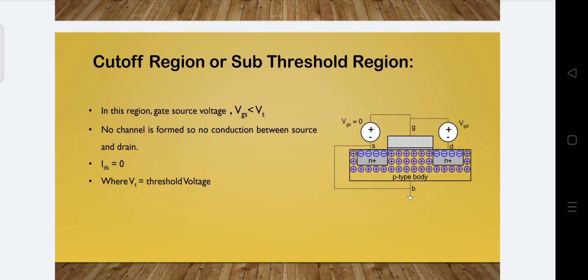First is the cutoff region. In this region we give VGS equal to 0, which is less than threshold voltage. Threshold voltage is the necessary voltage needed for the transistor to switch on the device. In this condition no channel will be formed between source and drain terminal. Between the N+ source terminal and drain there will be positive holes present, which is the P-type body. No channel is inverted between source and drain, so no conduction will happen and IDS is equal to 0.